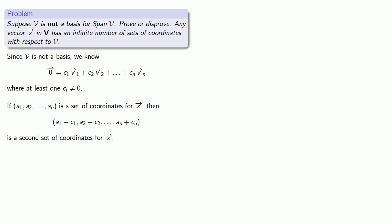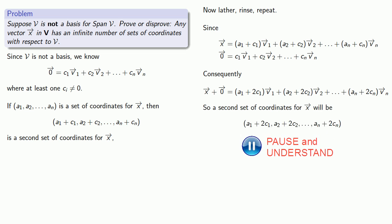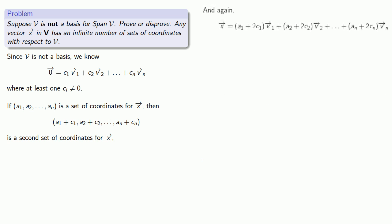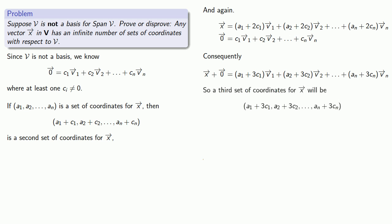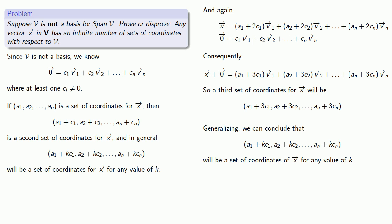An important idea in mathematics is that anything we can do once, we can do as many times as we want — lather, rinse, repeat. Now that I have a set of coordinates for x, I can add the zero vector and get a new set of coordinates for x. And again, I can add the zero vector and get yet another set of coordinates. We can generalize this: once I know one set of coordinates for x, I can produce as many sets as I want. So any vector x will have an infinite number of sets of coordinates with respect to v.